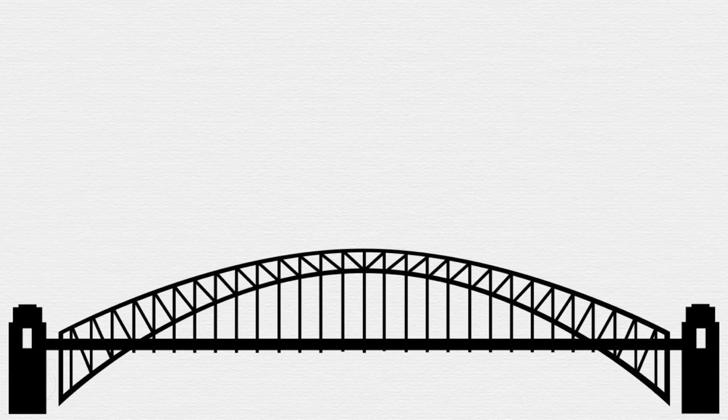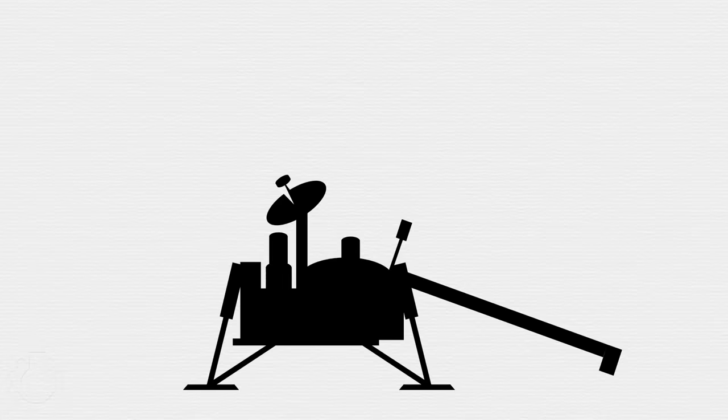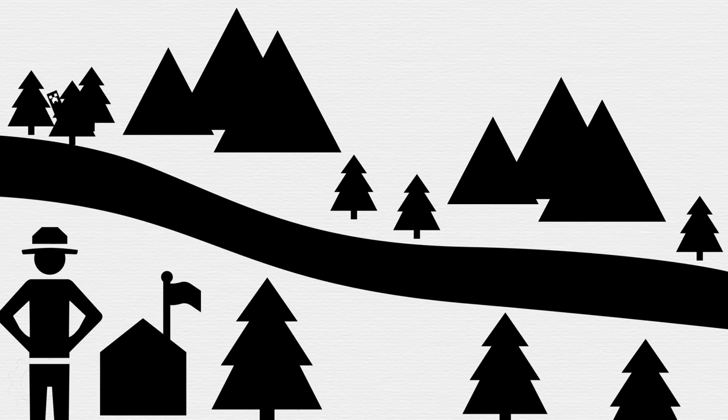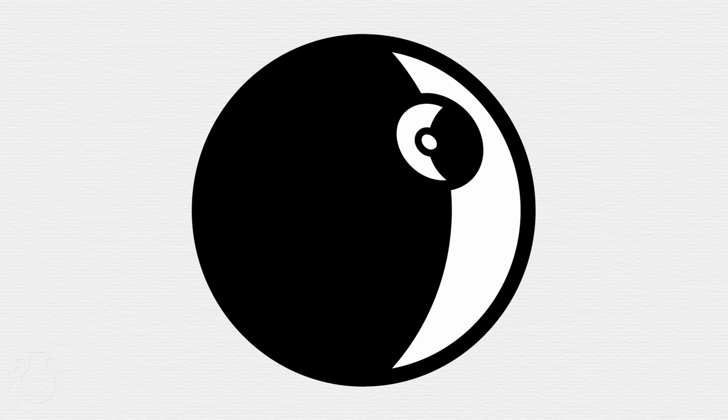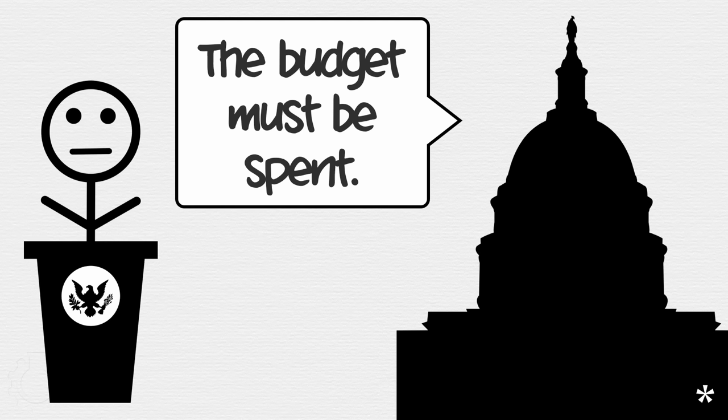So Congress decides what it wants — bridges, tanks, buildings, courts, robots on Mars, robots on Earth, national parks, whatever — and approves a budget with that stuff in it. Once approved, the President is required by law to spend the money Congress listed in the budget and pay for it using the taxes that Congress set.